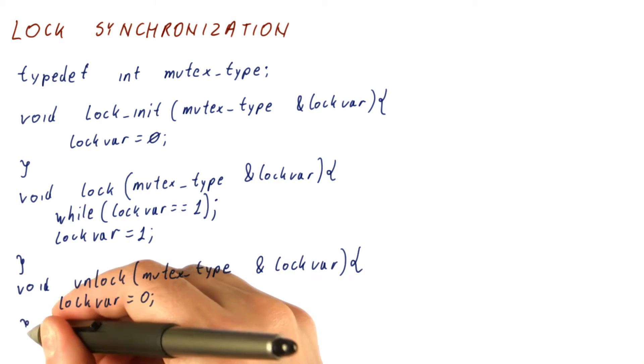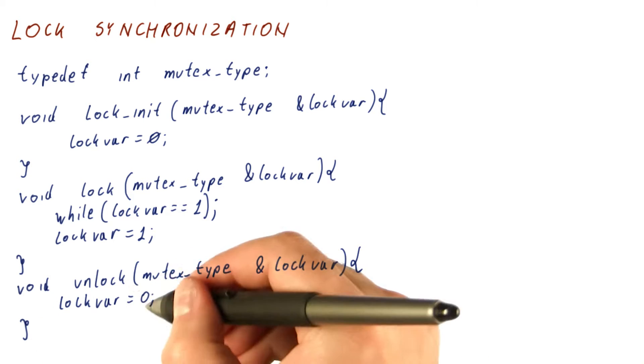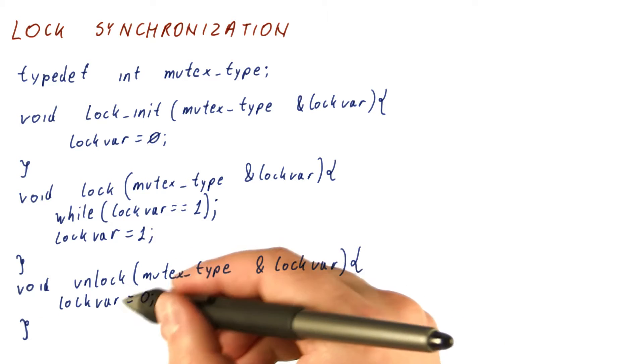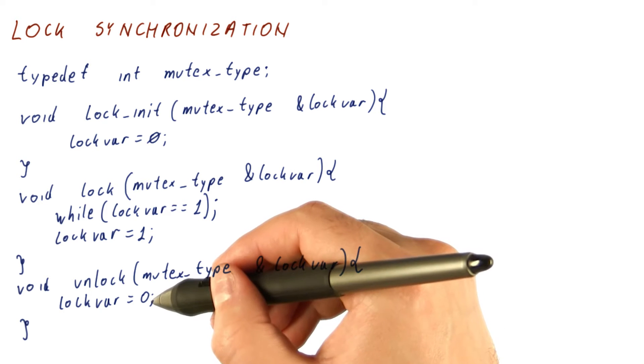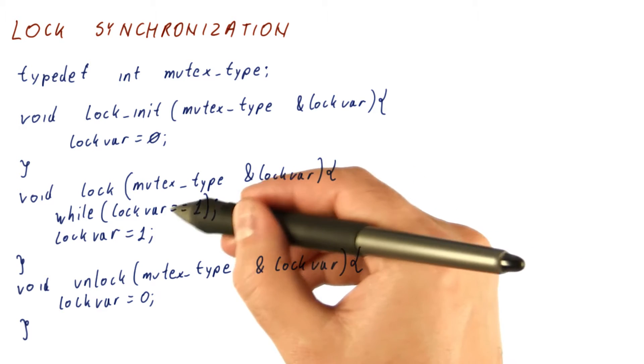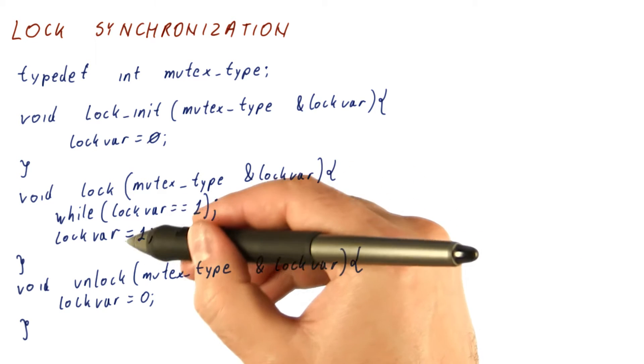And then to unlock, we will just set the lock variable back to being free. Once we do this, coherence ensures that whoever is waiting here now sees a zero and acquires the lock themselves. So we let them go into the critical section.